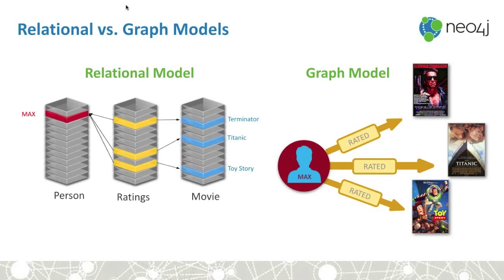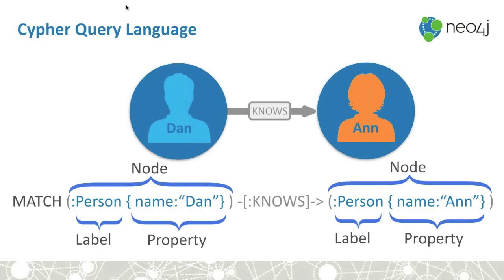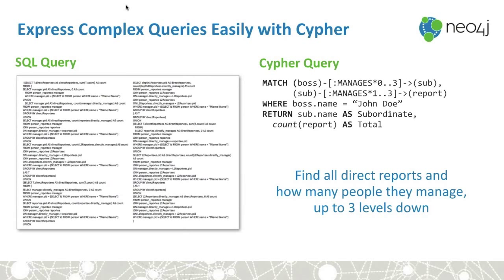We also have a query language called Cypher to ask questions of the graph and find patterns in it. Here we're looking at a person named Dan who knows another person named Ann, and we're matching this pattern in the graph. Cypher is designed to make it easier to describe graph queries than SQL. SQL gets messy when you're trying to do multiple layers and multiple paths — those queries become hard to manage. Cypher gives a more condensed format for them.